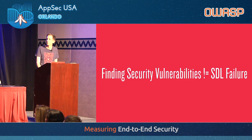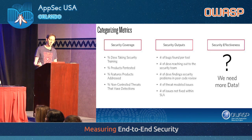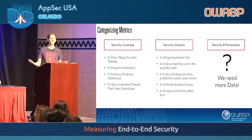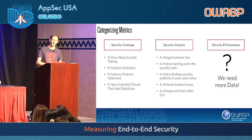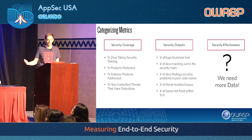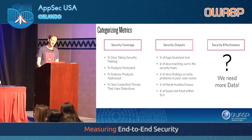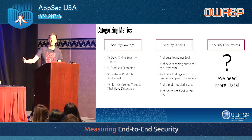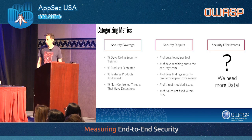So we started categorizing our metrics into three areas: security coverage, security outputs, and security effectiveness. Security coverage is how much of the organization we're covering — percentage of developers trained, percentage of products we're interacting with. Security outputs are the natural results of processes: tools find bugs, we track developer engagement with the security team, and the number of threat-modeled issues. But none of these actually show the security program is working. We don't know if our training or tools are effective — we need more data.